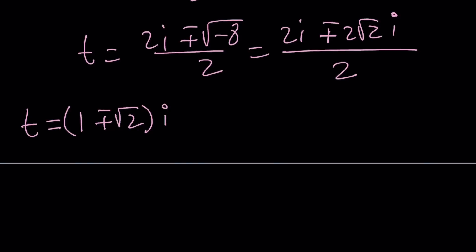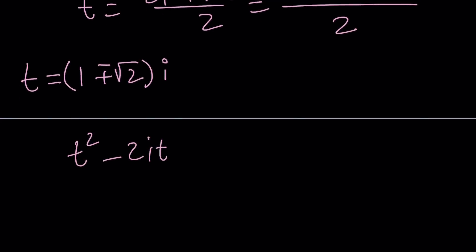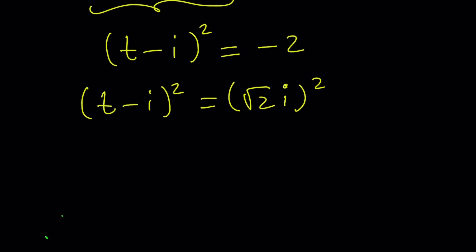The other method is I'm going to pick up from here. t squared minus 2i t plus 1 is equal to 0. We can subtract 1 from both sides. And the second method, this is called completing the square. I'm going to add i squared to both sides. You'll see in a little bit why. And this becomes a perfect square. t minus i squared. And this is negative 1 minus 1, which is negative 2. And from here, you can write negative 2 as root 2i squared, because that's what it is. And then square root both sides.